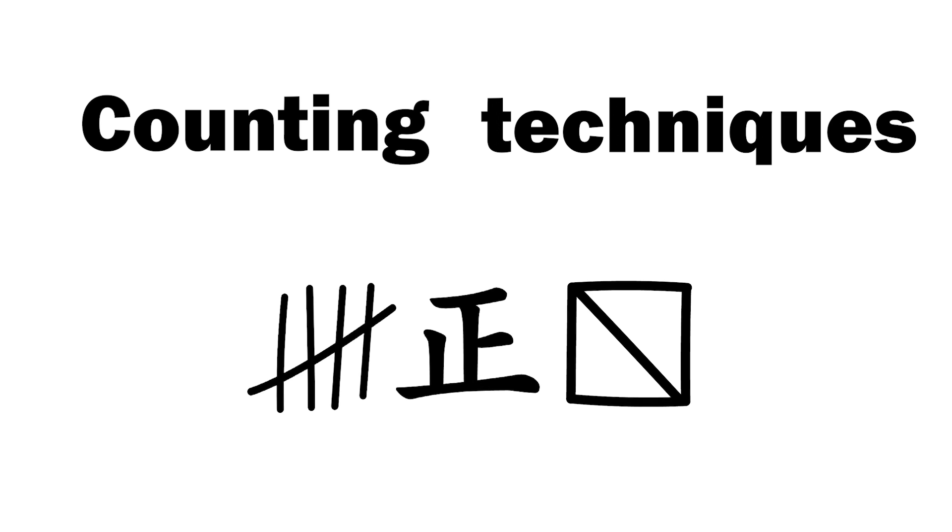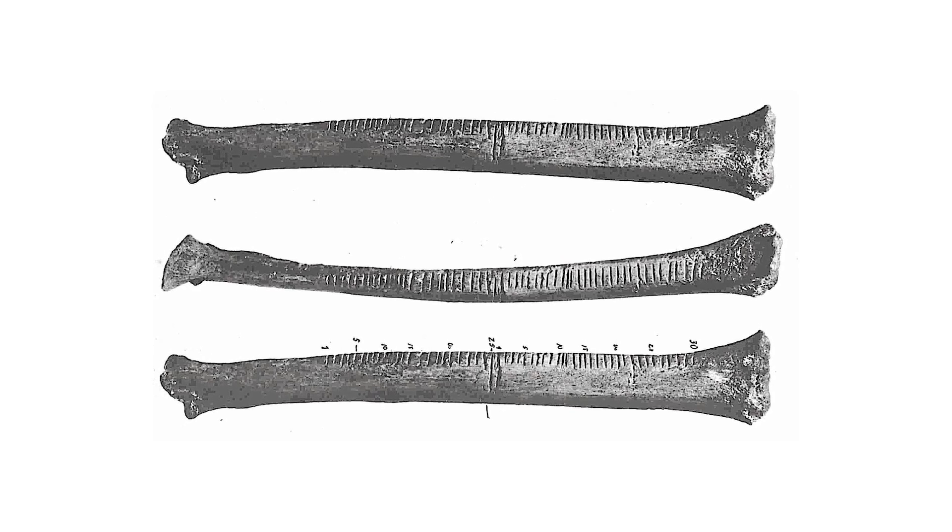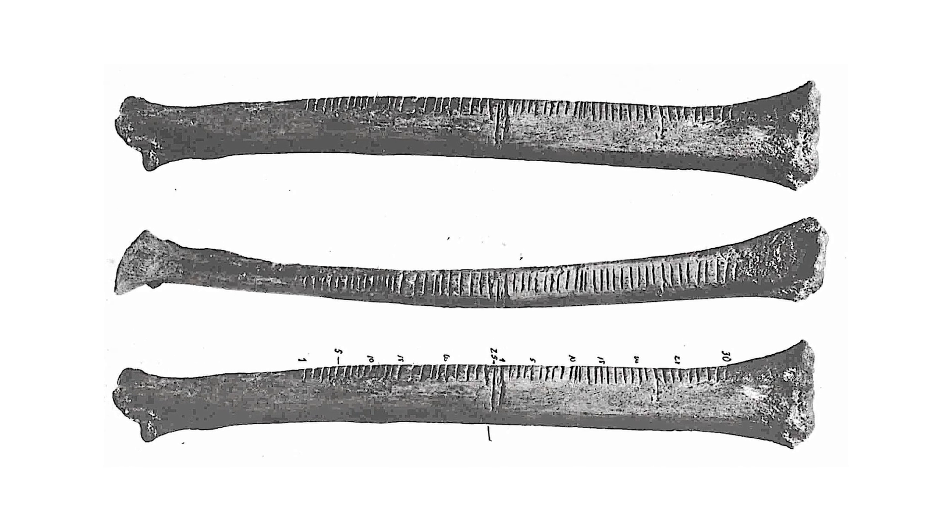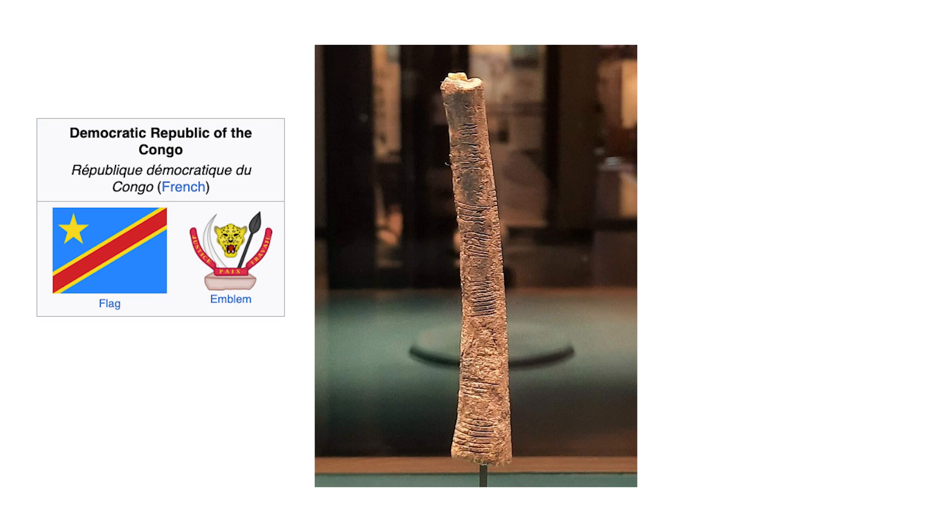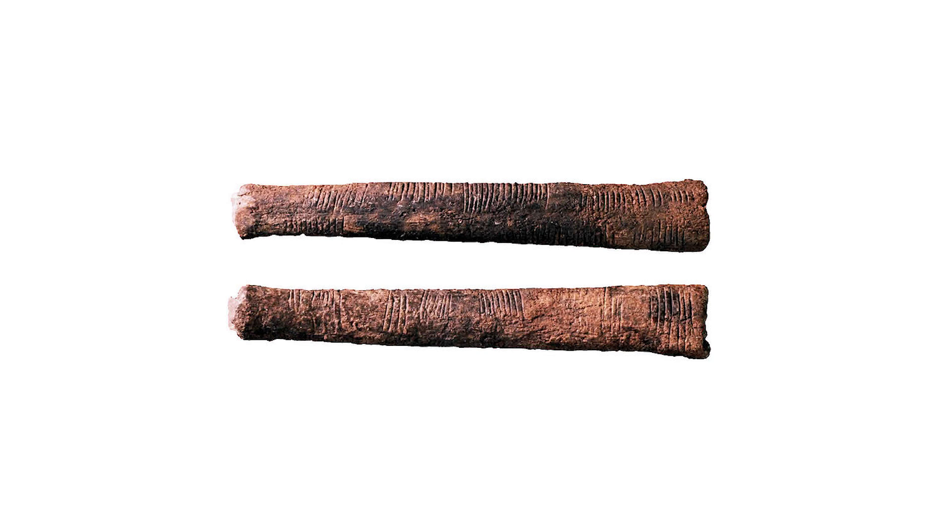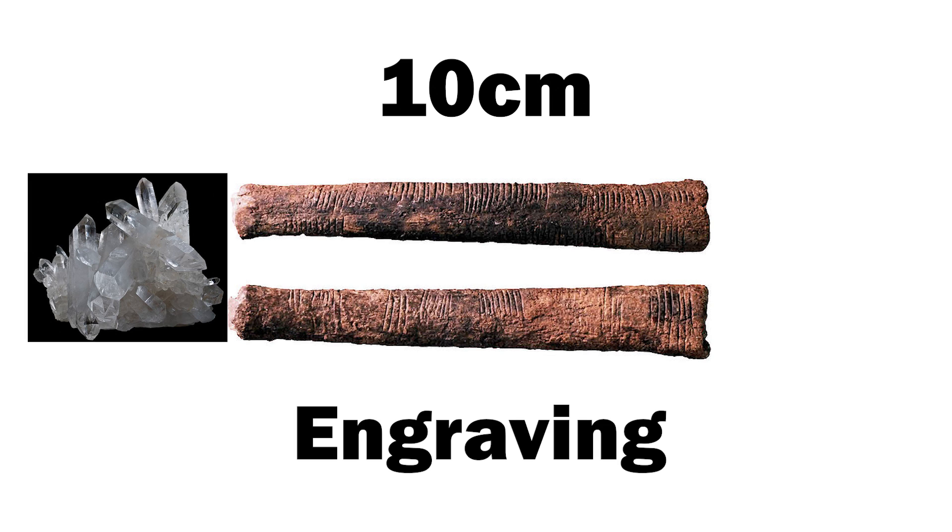Counting techniques such as this can be seen back in the Upper Paleolithic period, where tally sticks in the form of notched animal bones were used for a wide range of tasks. A notable example is the Ishango bone that was discovered in the Democratic Republic of the Congo in 1950. The bone itself is about 10cm and features a sharp piece of quartz affixed to the end, which is speculated to be for engraving.